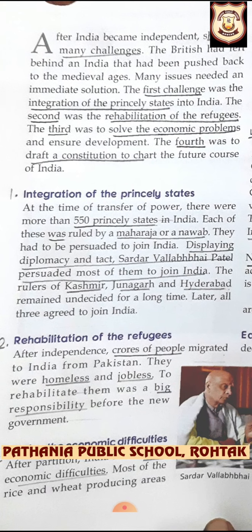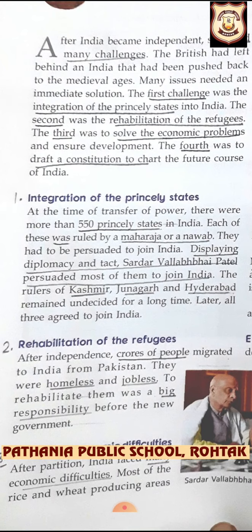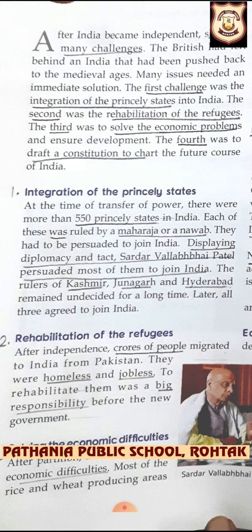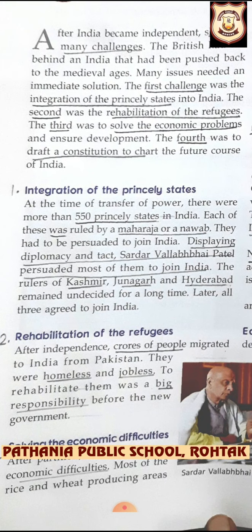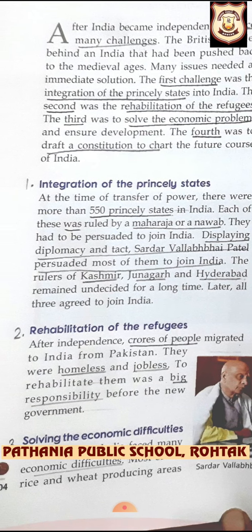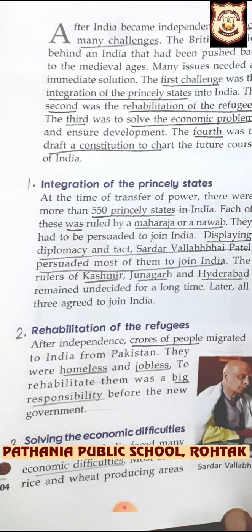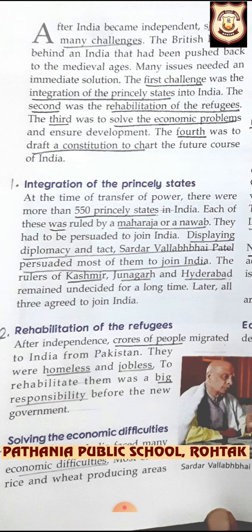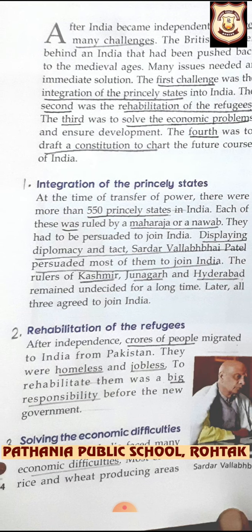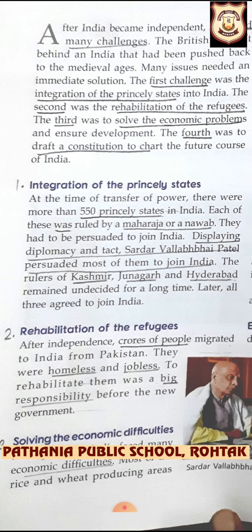At the time of transfer of power, there were more than 550 princely states in India. Each of these was ruled by a maharaja or a nawab — different rulers for different princely states. They had to be persuaded to join India. Displaying diplomacy and tact, Sardar Vallabhbhai Patel persuaded most of them to join India, playing a very important role at that time.